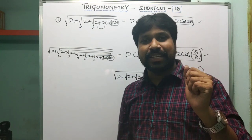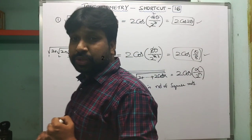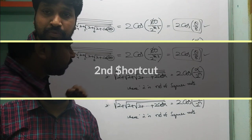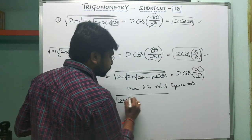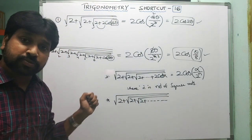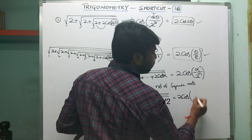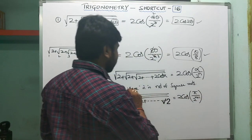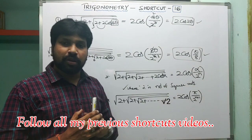Now I want to reveal the second shortcut, which is related to the first. The second shortcut applies when you have: square root of 2 plus square root of 2 plus square root of 2 plus... and so on, but with no cosine term at the end — just nested square roots of 2. In that case, the formula is: 2cos(π / 2^(n+1)), where n is the number of square roots.